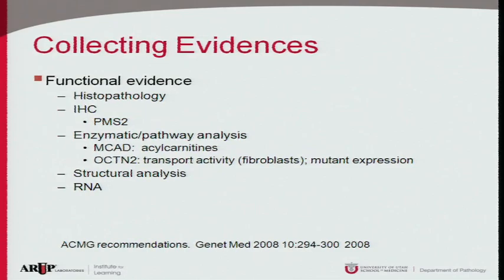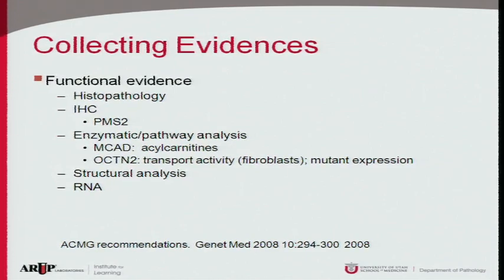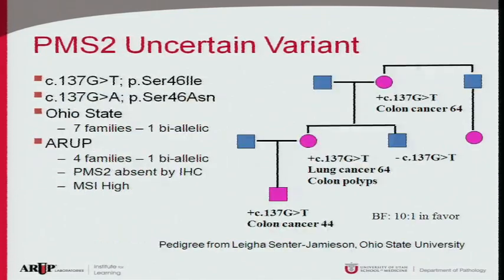When collecting additional evidence, we accept a very broad definition of functional. For example, we use immunohistochemistry — here's an example with the PMS2 gene for Lynch syndrome to see if the protein is expressed. We can combine expression data with a mutation we're evaluating. For biochemical diseases, we can look at enzyme activity or pathway markers — for MCAD deficiency, we look at acylcarnitines or transferase activity. Sometimes structural analysis or RNA studies are also useful.